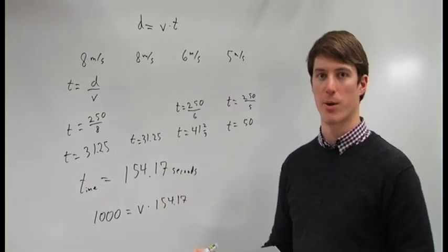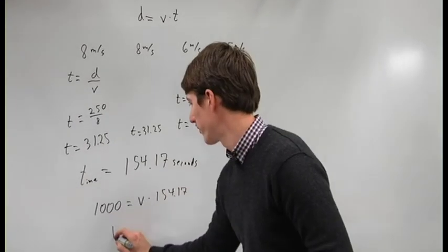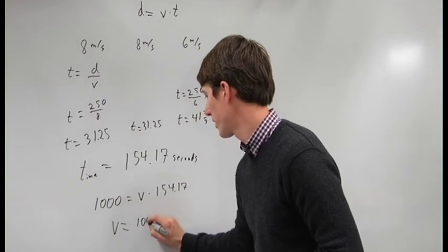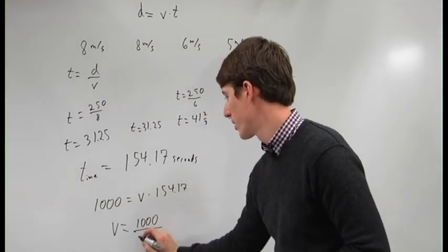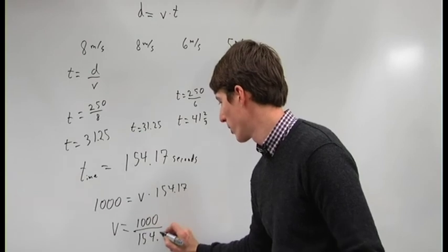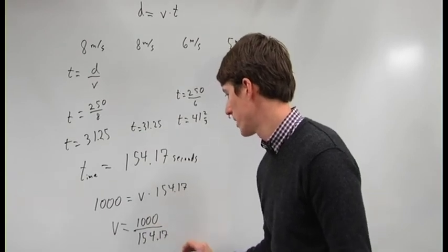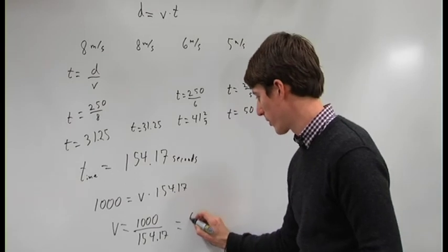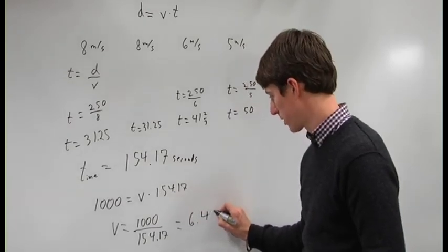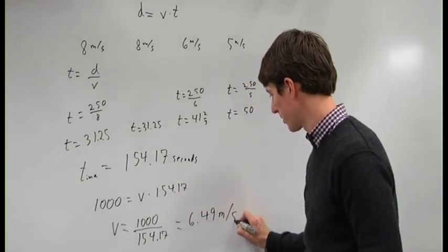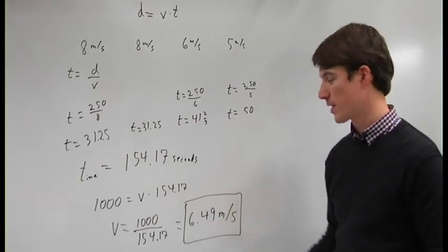Then we can just solve for v. That will be our average velocity. So v equals 1,000 meters divided by 154.17 seconds, which gives us an average velocity of about 6.49 meters per second. That's our answer.